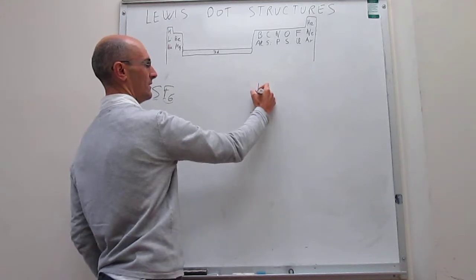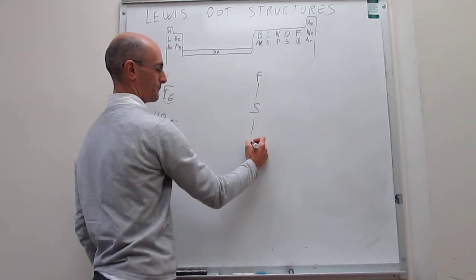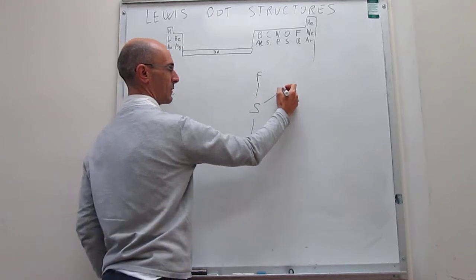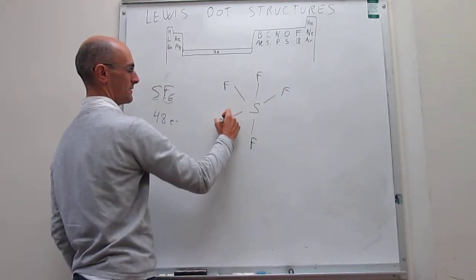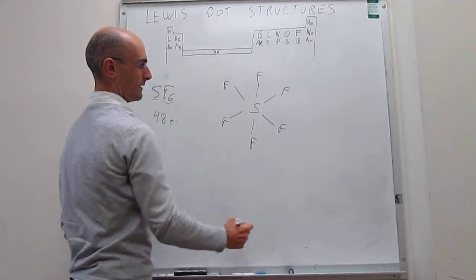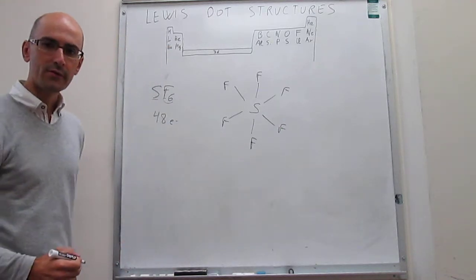We draw the structure, sulfur at the center, and then fluorine atoms, we have 6 of them. We can draw them like this.